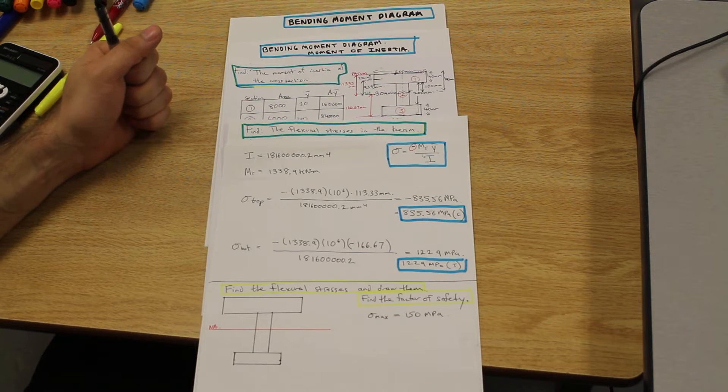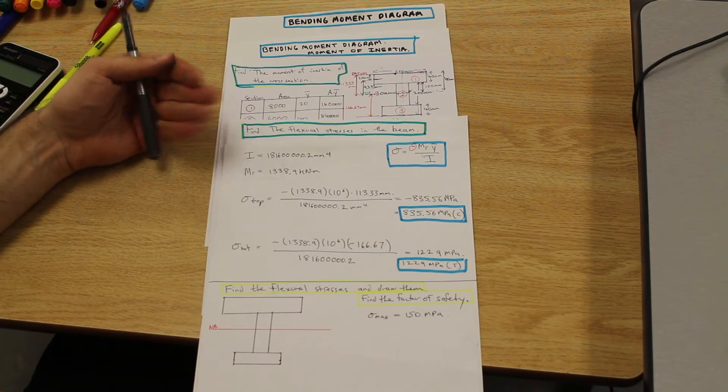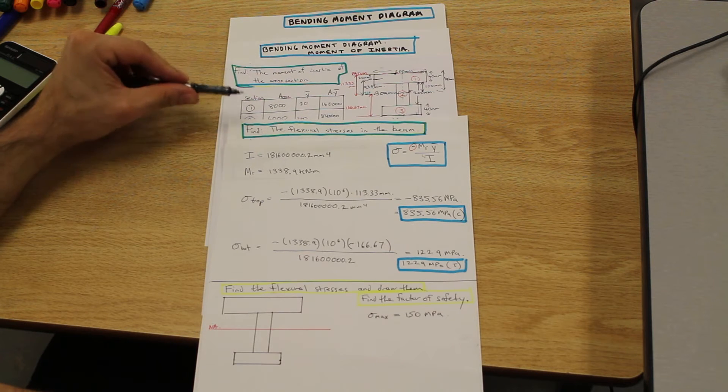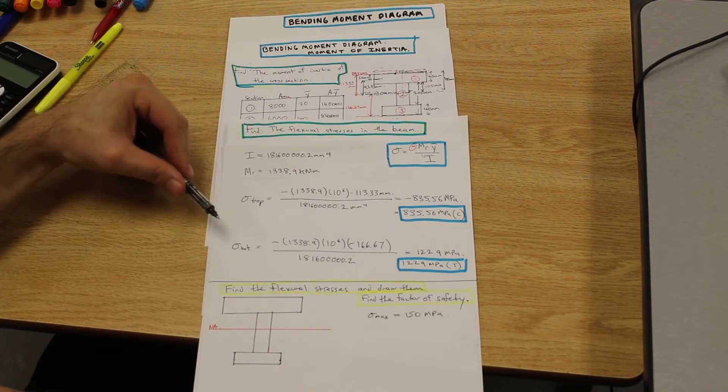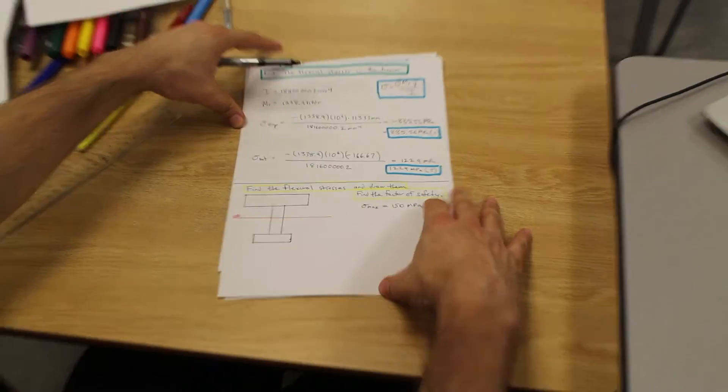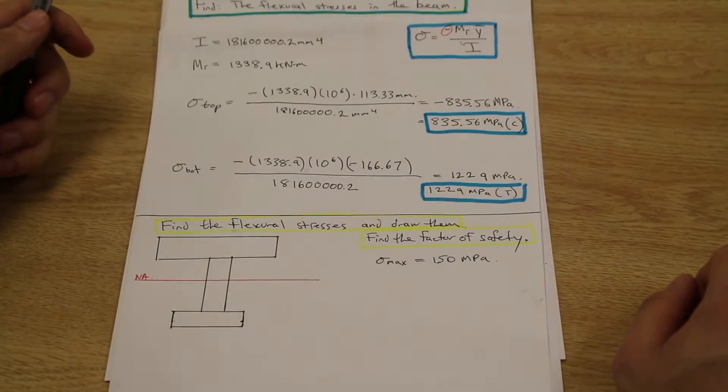If you've been following the series, I just laid out the questions that we've done so far. We did our bending moment diagram, we found the moment of inertia, we found the flexural stresses in the top and bottom of the beam, and the final step to this question is going to be drawing them.